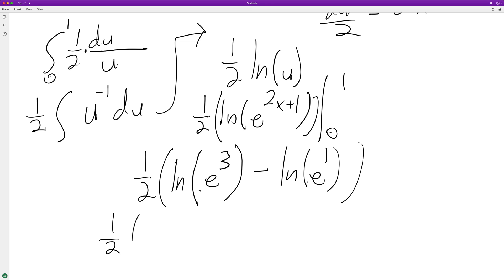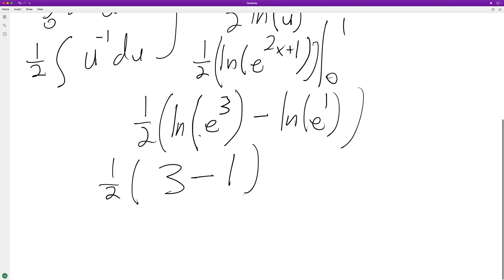So this ends up being one half. The natural log of e raised to the 3rd is just going to be 3, and then minus 1. So then we end up with one half times 2, which is equal to 1.